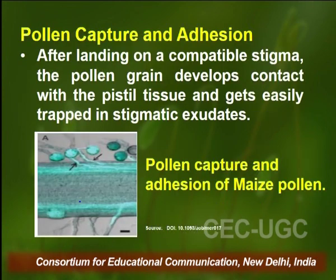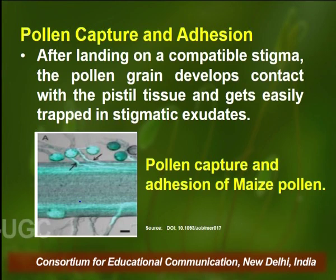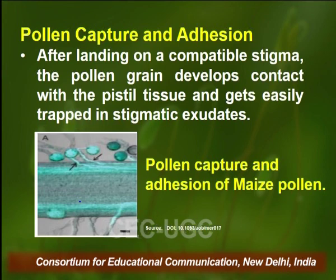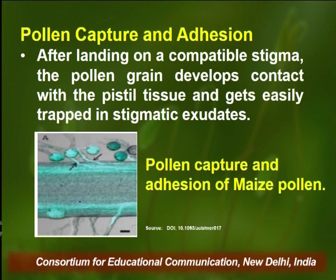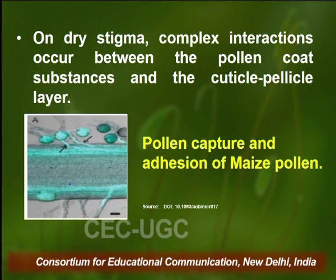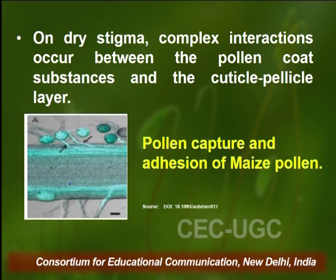Certain pollen are present on the surface of the stigma — this is shown in the case of the maize plant. After landing on a compatible stigma, the pollen grain develops contact with the pistil tissue and gets easily trapped in the stigmatic exudate. On dry stigma, complex interactions occur between the pollen coat substances and the cuticle pellicle layer.